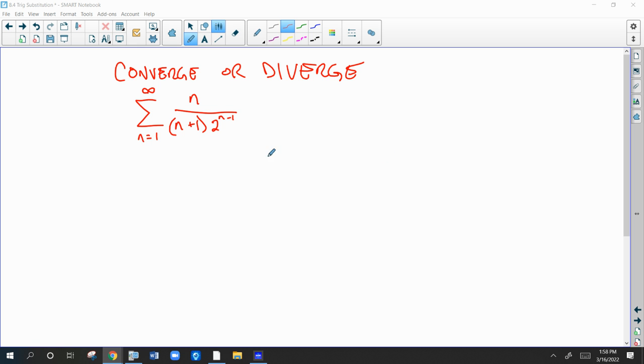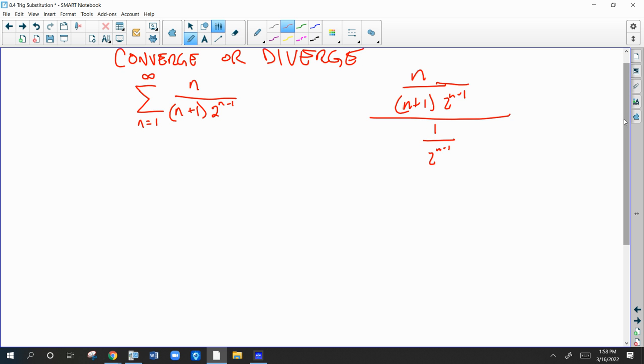So let's get rid of the 2 to the n minus 1. In other words, what I'm thinking is if we can do a limit comparison test of this series and this series, well, the 2 to the n minus 1s will cancel out and we'll get a finite limit and then we'll have an answer.